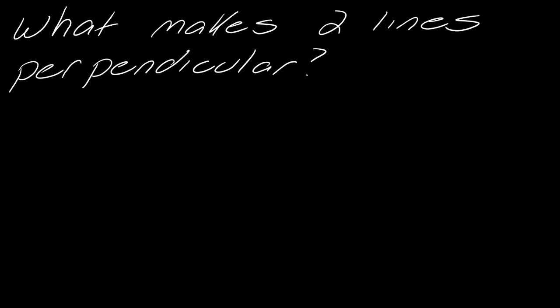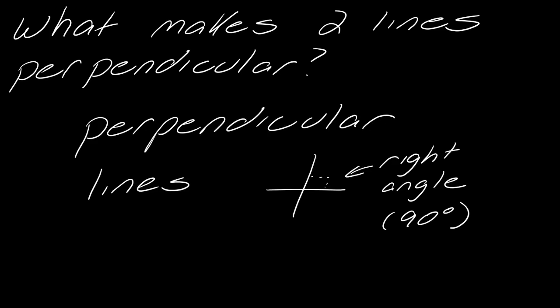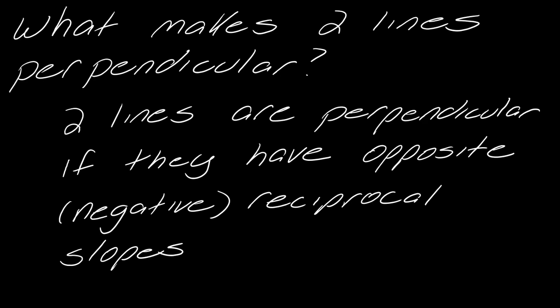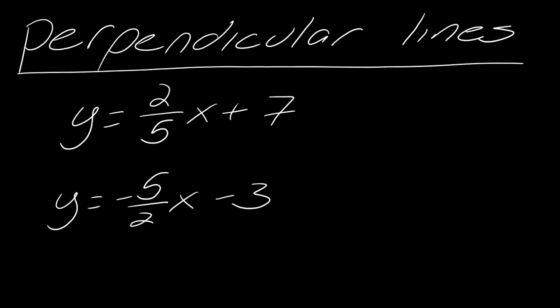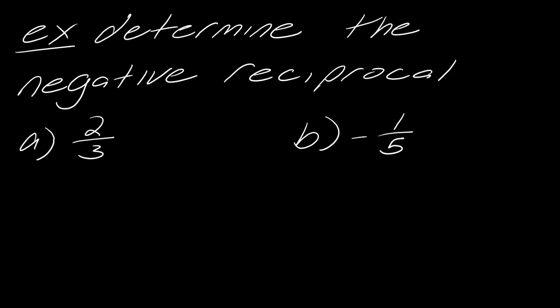Now let's talk about what makes two lines perpendicular. Usually people think of a right angle — a 90-degree angle between the two lines. But from a mathematical standpoint, two lines are perpendicular if they have what are known as opposite or negative reciprocal slopes. I can tell right away that an example pair of lines are perpendicular by looking at their slopes. It's important to quickly pick this out, so I want to talk about how to find the negative reciprocal.